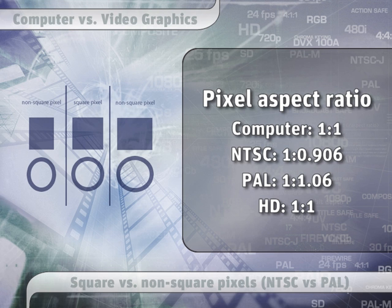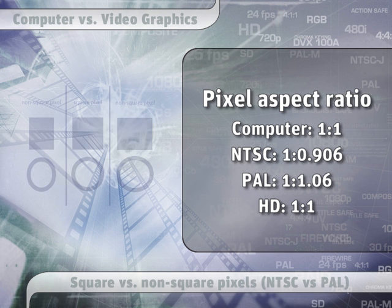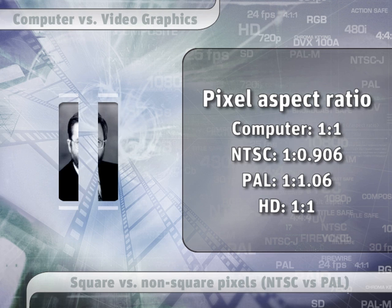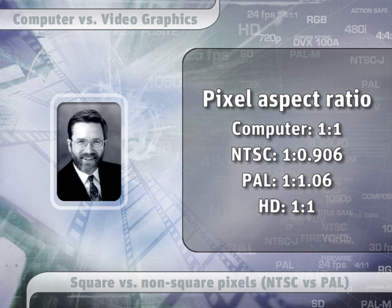The only good news is that HD, thank goodness, uses square pixels. So as we migrate from a standard def format to a high def format, our problems with rectangular pixels will gradually fade. But for right now, we're right in the middle of it, and it's a problem.